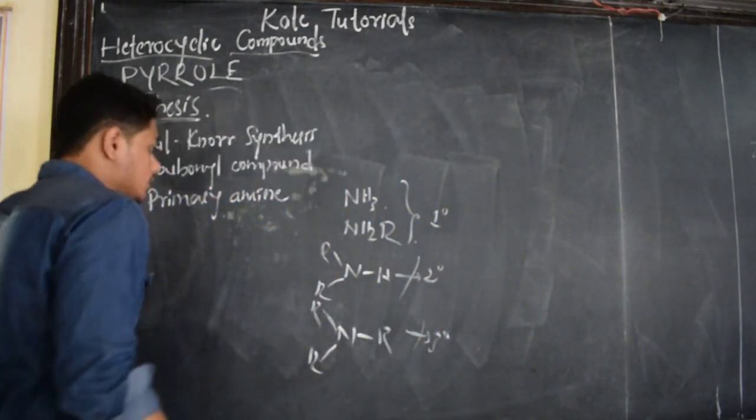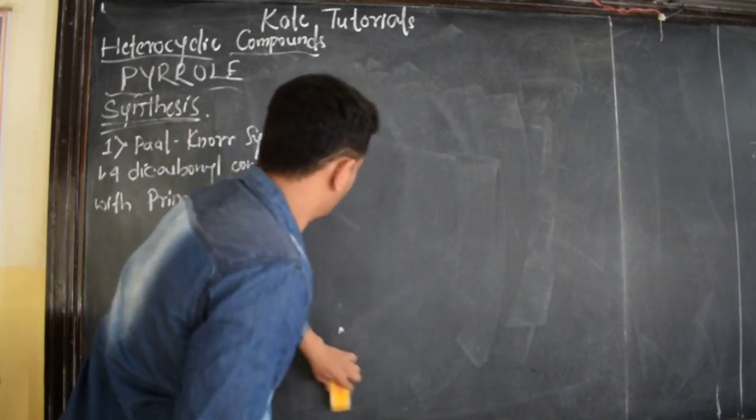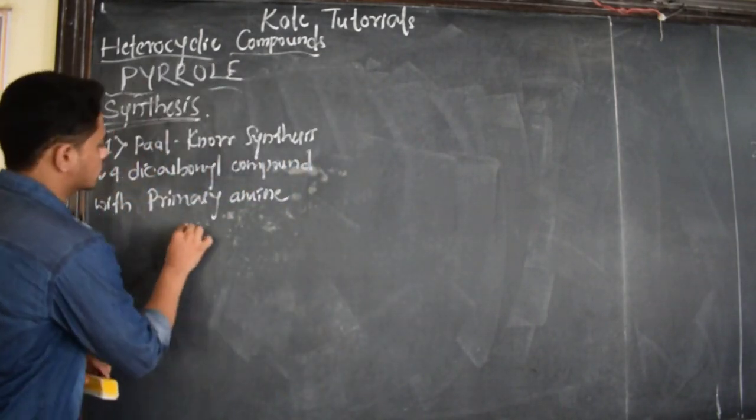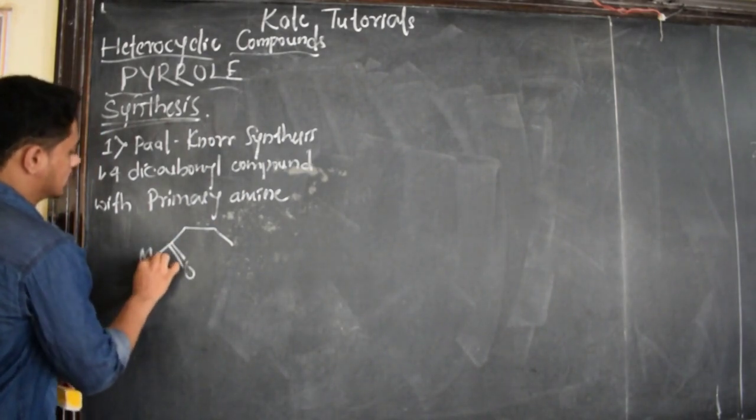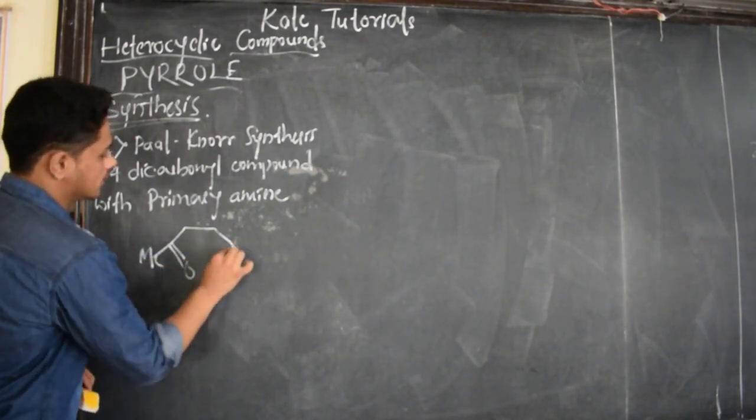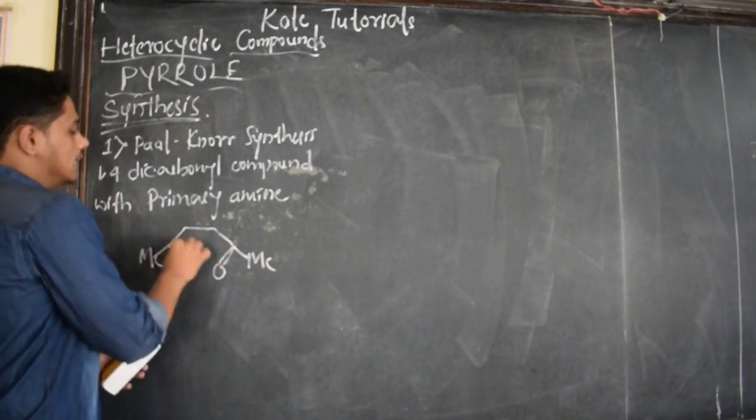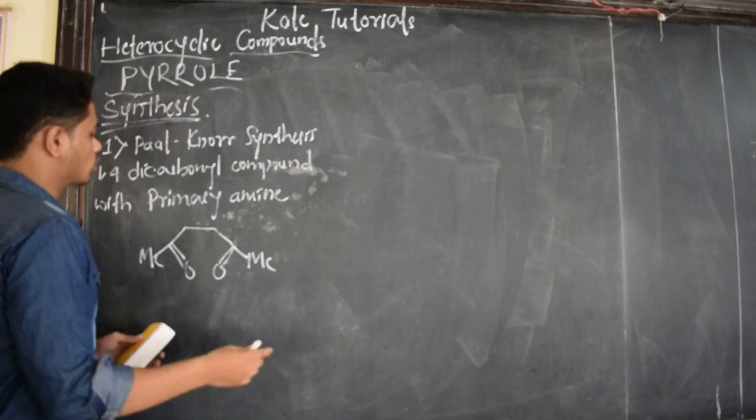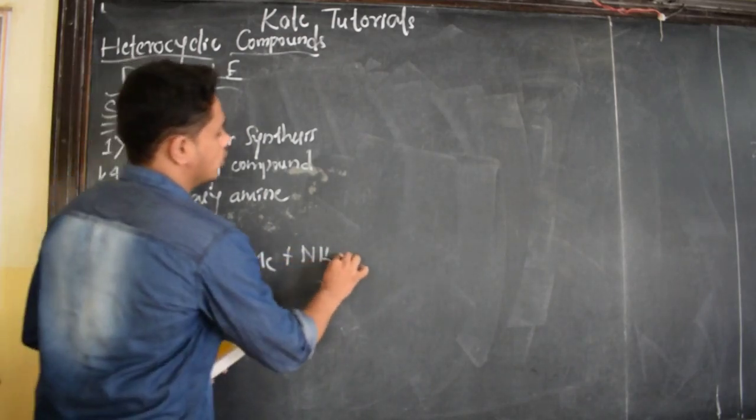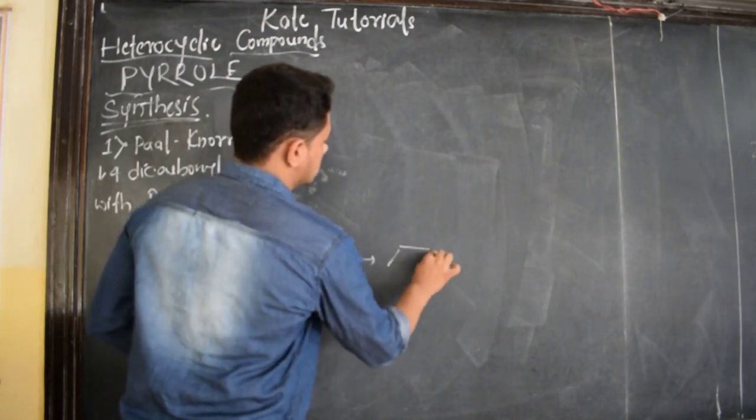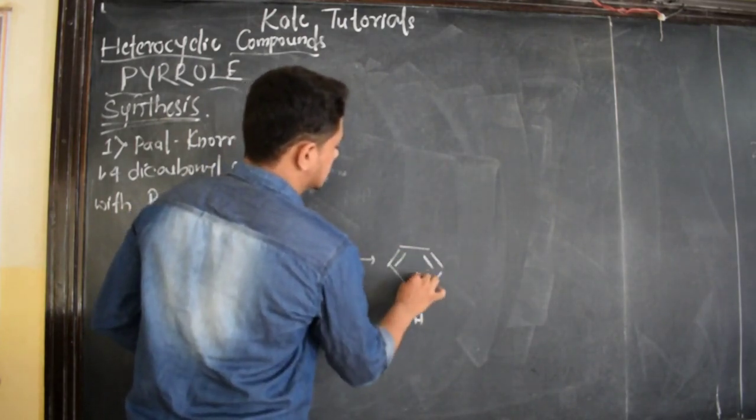So the reaction for this is 1,4-dicarbonyl compounds. Here I am going to be getting two methyl groups. This is 1,4-dicarbonyl compounds because here ketone group is there. When it is treated with ammonia, I am going to get pyrrole. This is the structure of pyrrole. This is the synthesis.